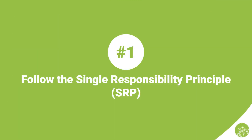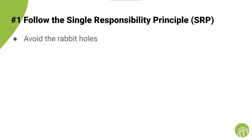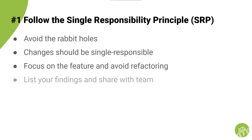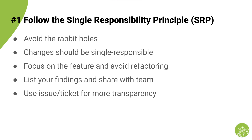Number one: follow the single responsibility principle. Avoid falling down the rabbit holes. Commit changes should be single responsible. Focus on what you are working on while working on a feature and overcome the temptation to change or refactor code. One suggestion is to create a list of your findings — first, free your mind by writing it down, and second, to be able to share it with your teammates later. For sharing purposes, you can also create a tech tab Jira ticket or GitHub issue to make it more transparent.